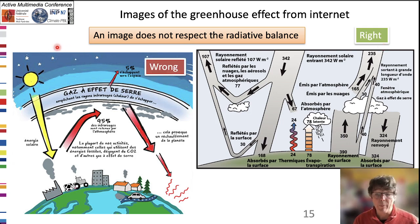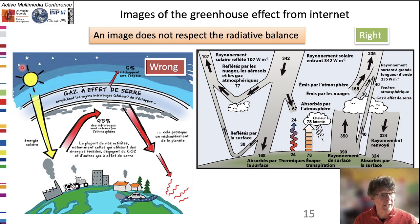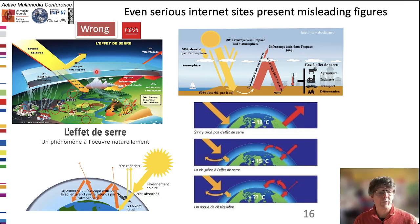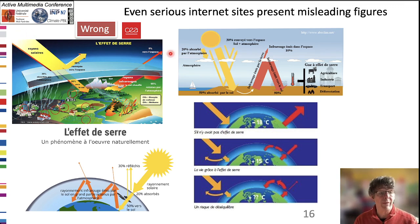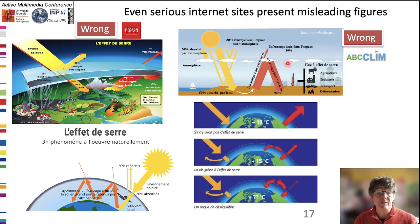However, some images built to explain the greenhouse effect in a simple manner fail to represent correctly such a balance, with an incoming flux much higher than the outgoing flux. Even serious internet sites present misleading figures in which the outgoing flux does not balance the incoming solar flux. In some cases only 35% is given back to space, in other cases it is 40%.